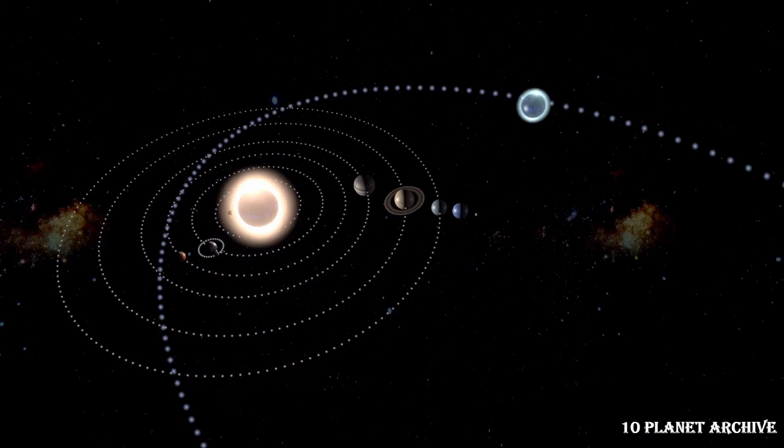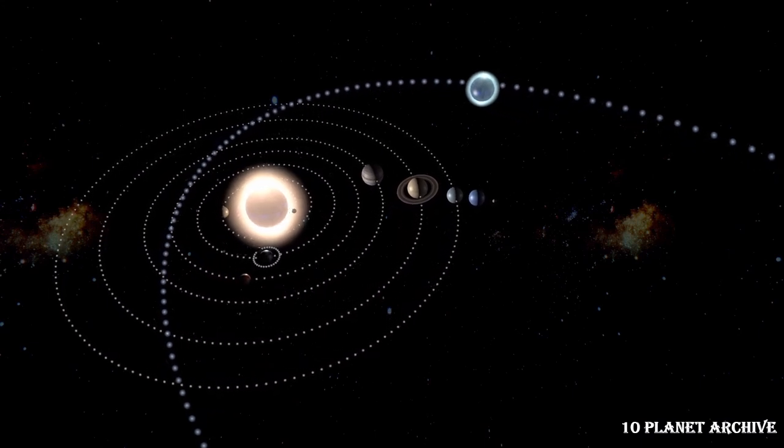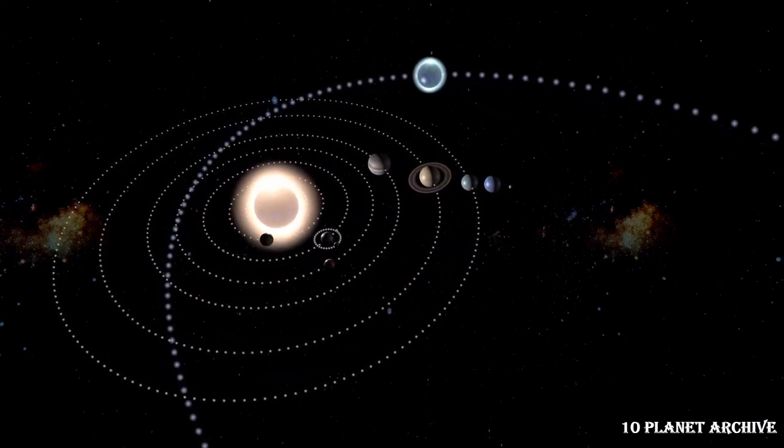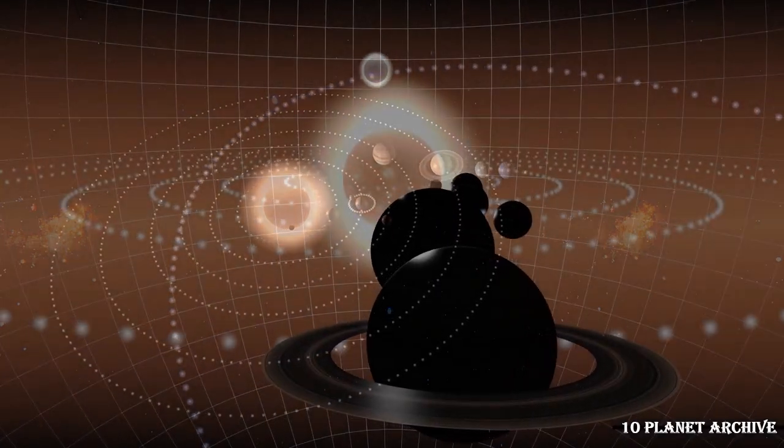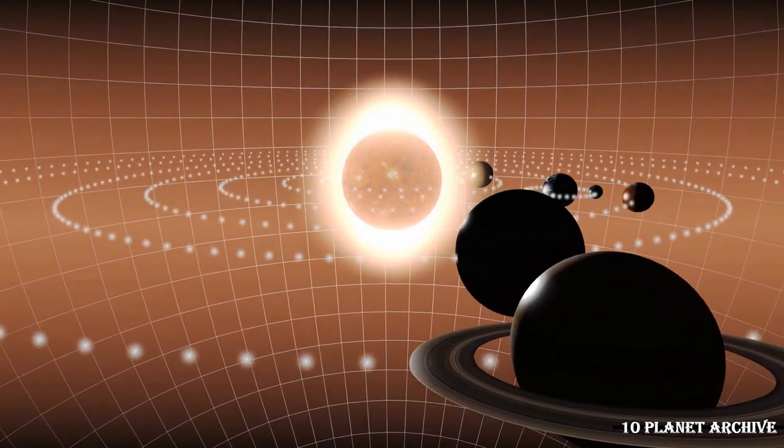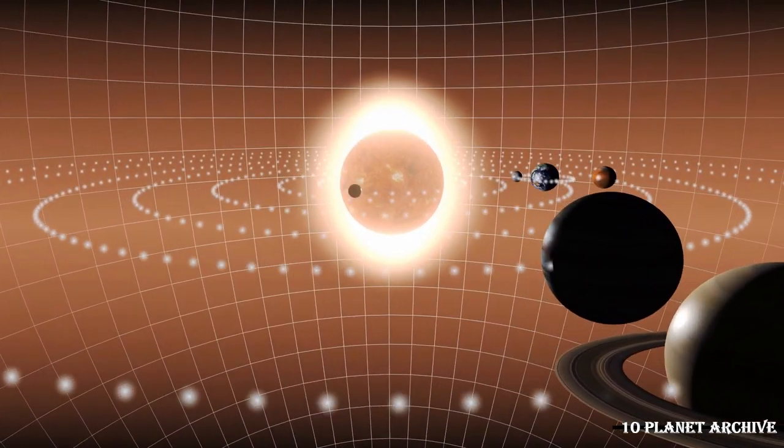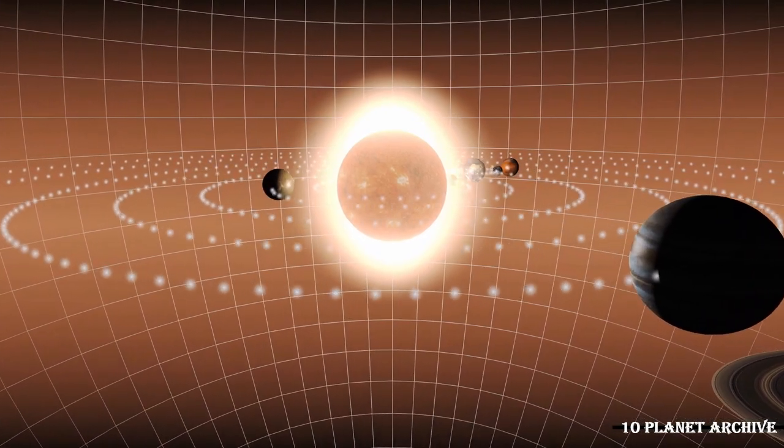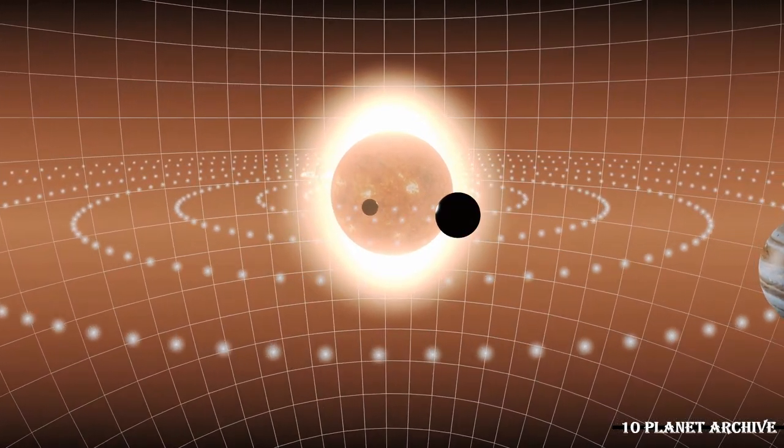When Pluto is close to the Sun, its surface ices sublimate, changing directly from solid to gas, and rise to temporarily form a thin atmosphere. Pluto's low gravity, about 6% of Earth's, causes the atmosphere to be much more extended in altitude than our planet's atmosphere.